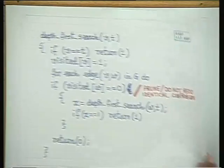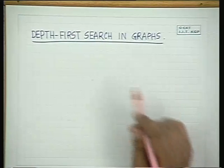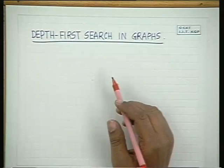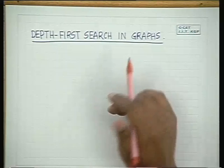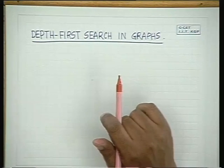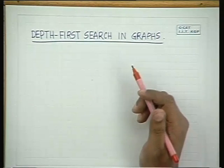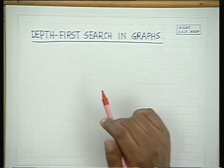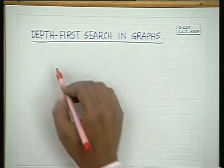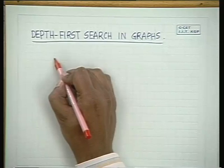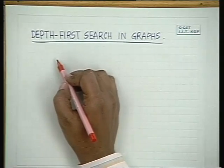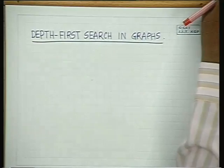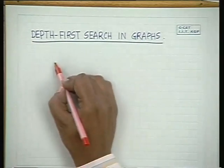Now let us see the efficiency of that algorithm, or how we will implement it in a particular data structure. Will we use an adjacency list, will we use an adjacency matrix, or will we use a direct representation? Let us take our running example and redraw it.